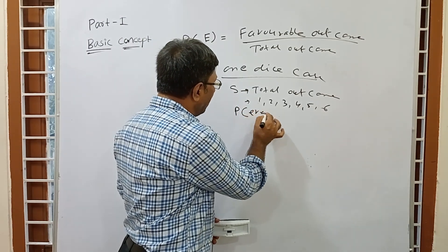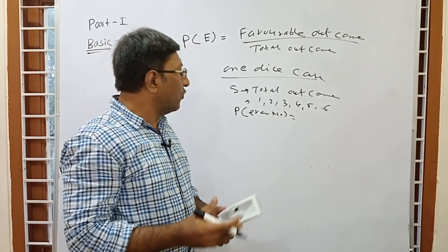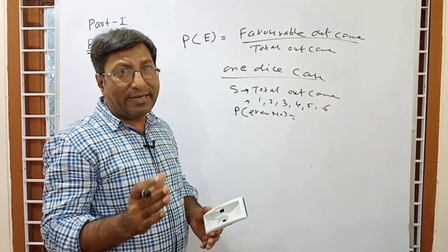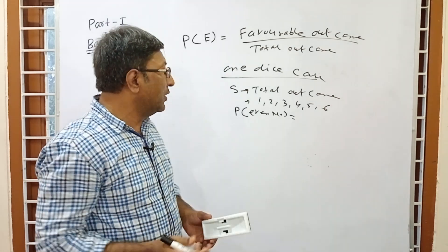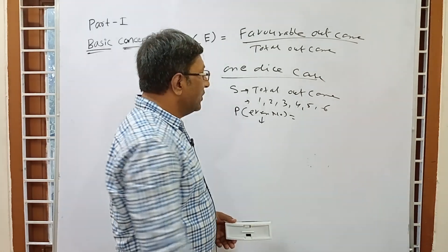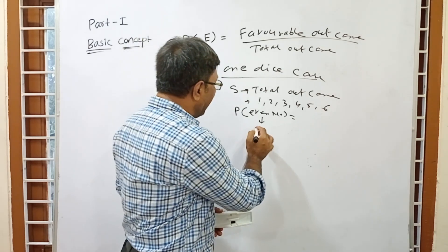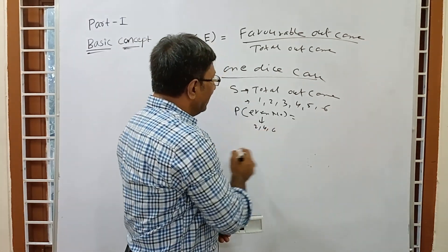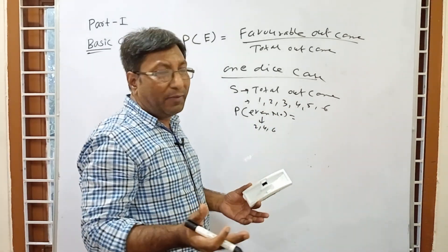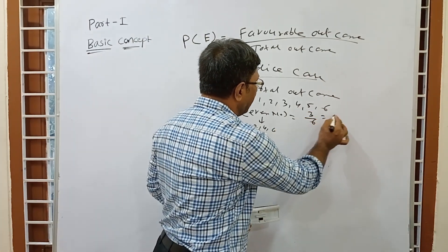If the question is: find the probability of an even number — that is, if we throw 1 die, what is the probability of getting an even number? Even numbers are divisible by 2. From outcomes 1, 2, 3, 4, 5, 6, the even numbers are 2, 4, and 6 — that is 3 favorable outcomes. Correct answer: 3/6 = 1/2.